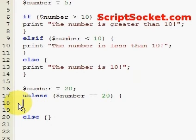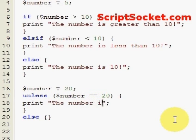Print... so unless the number is 20. So unless that is true, which the number is 20, so this is not going to be true. Print the number is not 20.